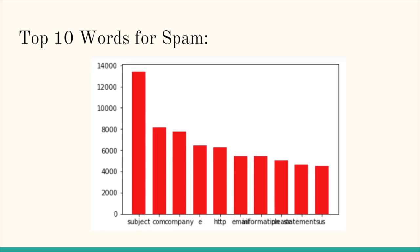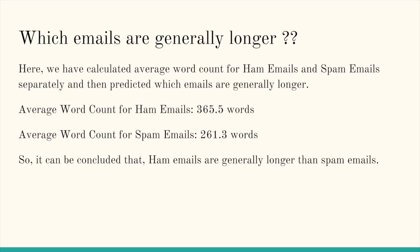For the top 10 words for spam: 'subject' has been recorded the most times, then 'com', 'company', 'e', 'http', and so on. 'Subject' appears around 13,000 times. For email length analysis, we calculated average word count separately for ham and spam. Average word count for ham emails is 365.5 words and for spam emails is 261.3 words, so ham emails are generally longer than spam emails.